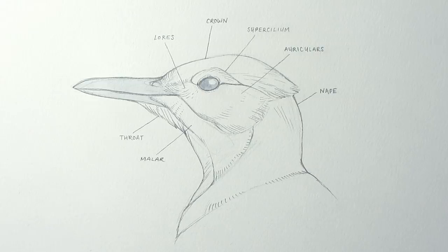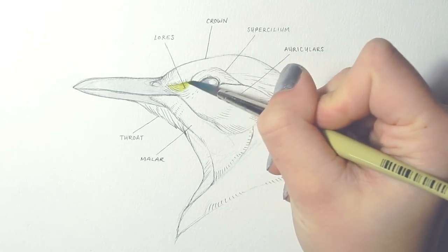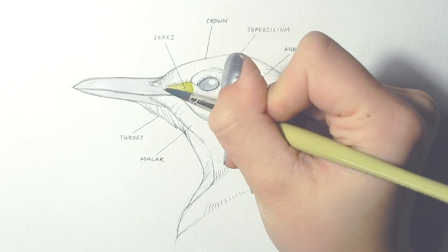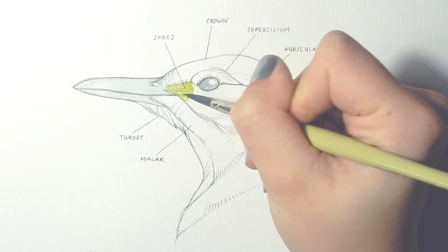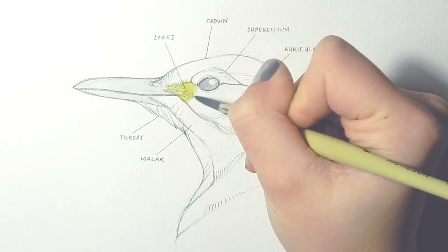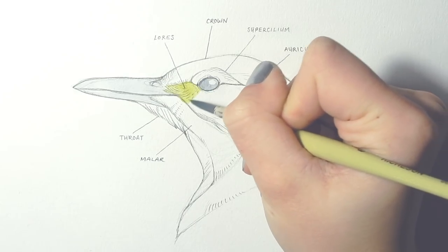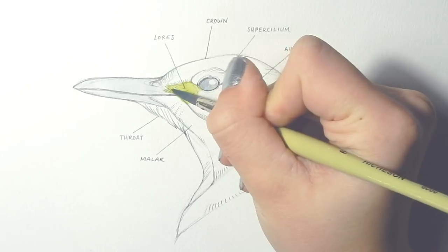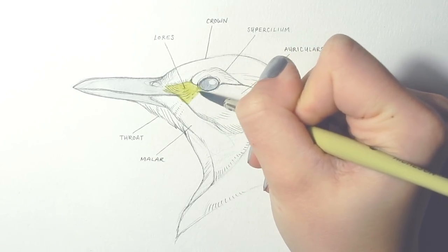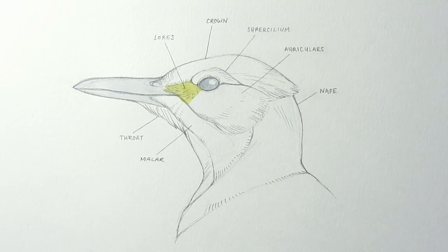The first little patch of feathers I'm going to talk about are the lores. The lores are right here in front of the eye, and sometimes this area on a bird is mostly skin and the lores are very thin and sparse. Sometimes the lores are hair-like or long or might even look like whiskers. So that's just this little section here in front of the eye, leading up to the top of the beak.